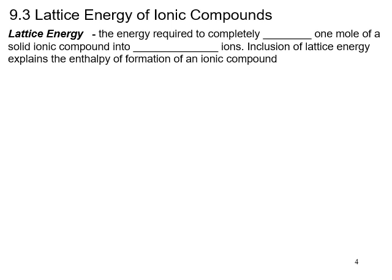Lattice energy is the energy required to completely separate one mole of a solid ionic compound into its gaseous ions. The enthalpies of formation given in appendix two of your textbook came from experimental and theoretical sources, including lattice energy. This doesn't really happen directly, but if you heat an ionic compound like lithium chloride solid, it melts to a liquid with separated ions, and if you keep heating it you can vaporize it — all the energy put in is the lattice energy.